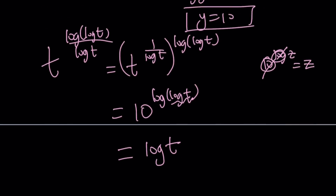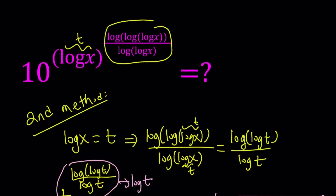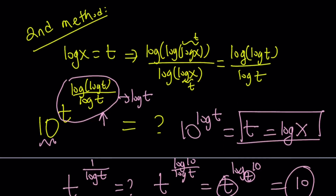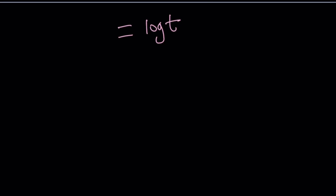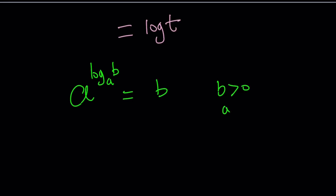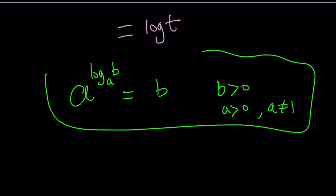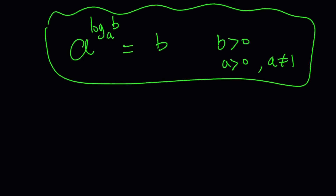So that's what we did: replacing log x with t, making substitutions and using properties. One of the most important properties used here is: if you have a to the power log base a of b, this always equals b. Of course, b needs to be positive, a needs to be greater than 0 and different from 1. As long as those conditions are satisfied, this property works. That is the end of the second method.